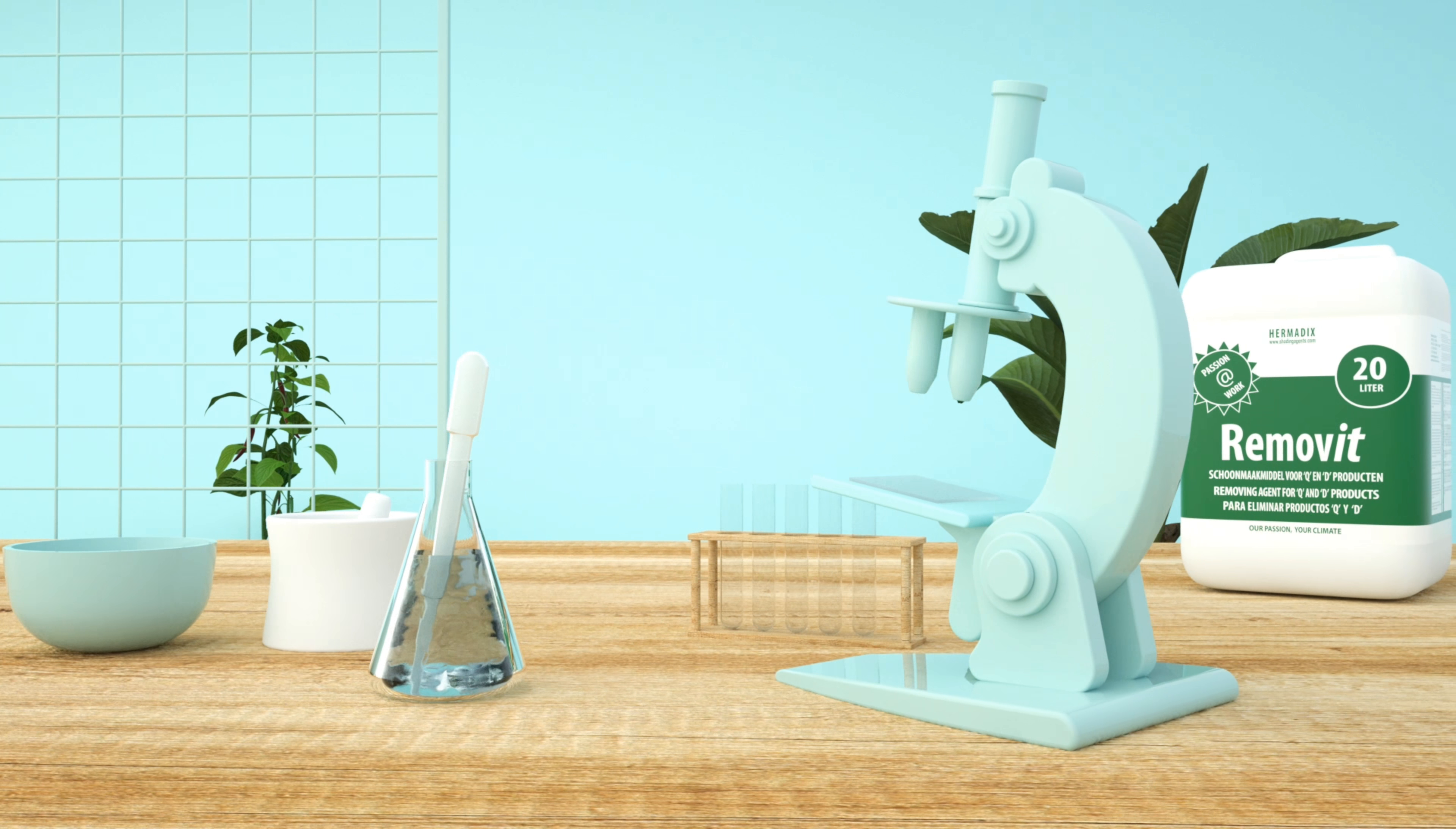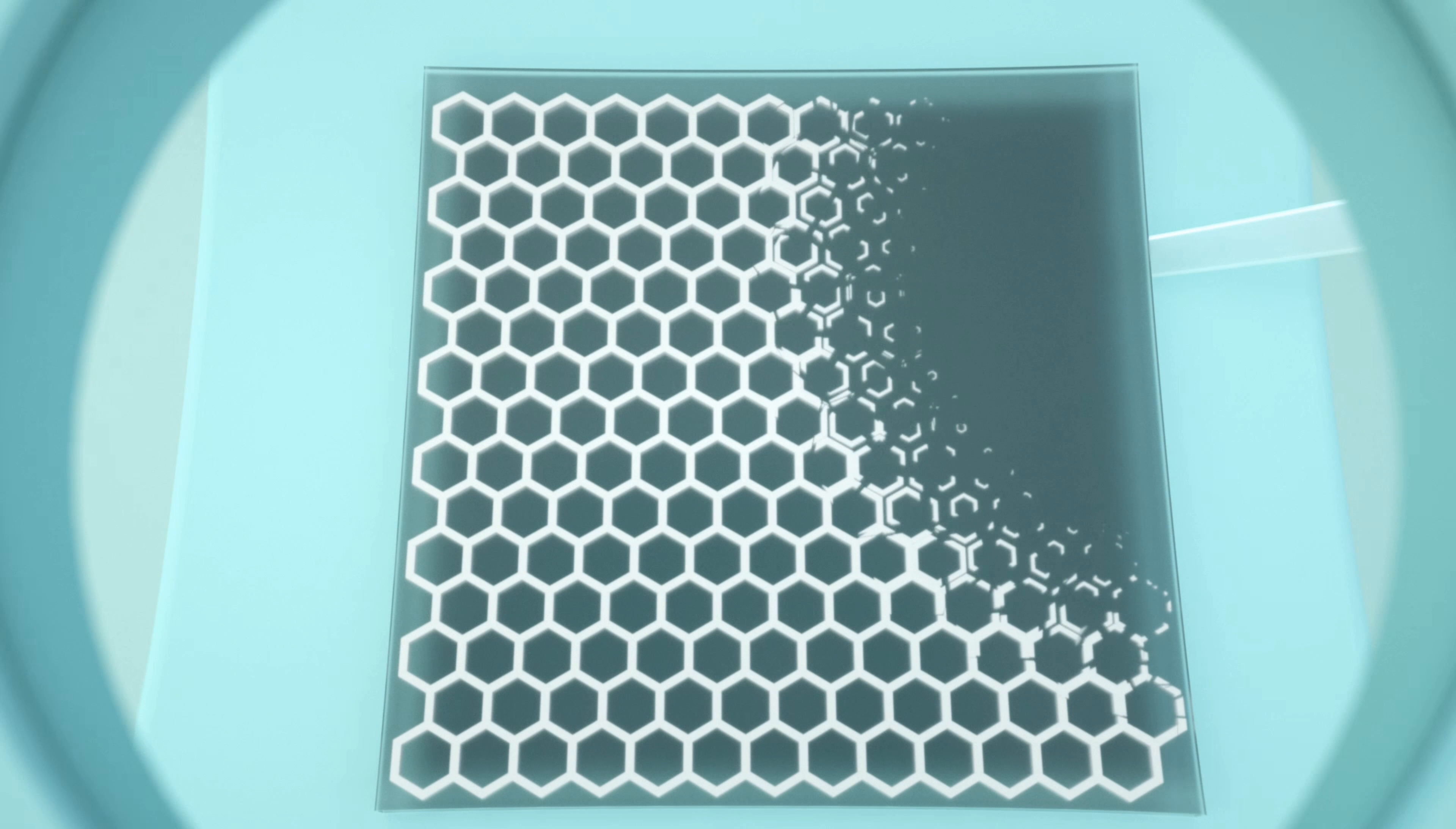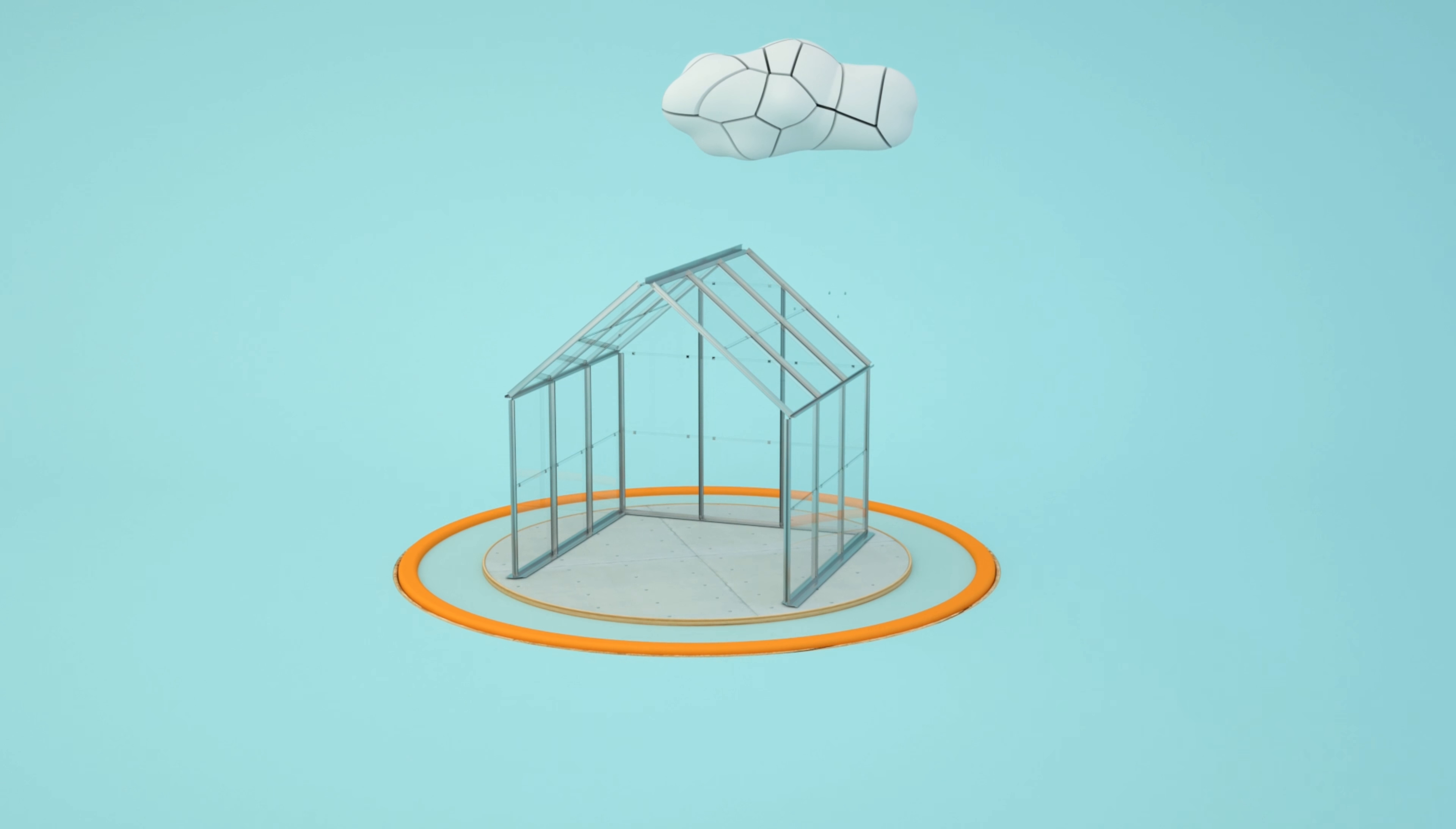Diffuse has a strong adhesive which ensures it remains on the glass, but is also easy to remove with Remove It and water. It can be removed manually or by allowing the rain to wash it off.